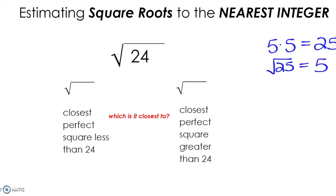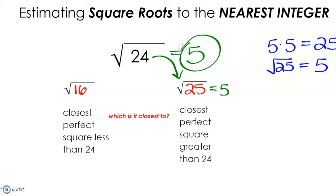Now, 24 is not a perfect square, but we would use our knowledge of perfect squares to help us estimate that value. So we need to start by looking for the closest perfect square that is less than 24, which is 16. And then the closest perfect square that is greater than 24 is going to be 25. Since 24 is closer to 25, we can estimate the value of the square root of 24 using the square root of 25. The square root of 25 is 5, so the estimated value of the square root of 24 to the nearest integer is going to be 5.